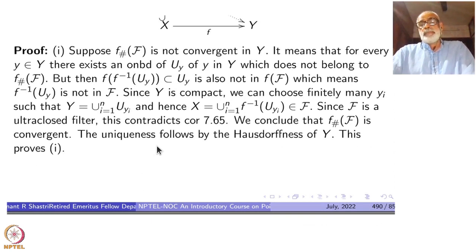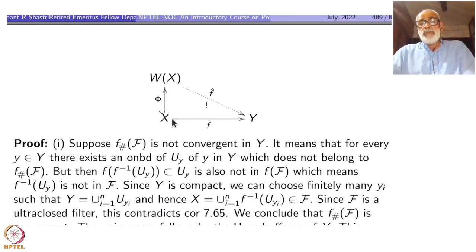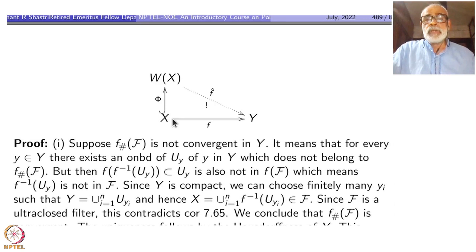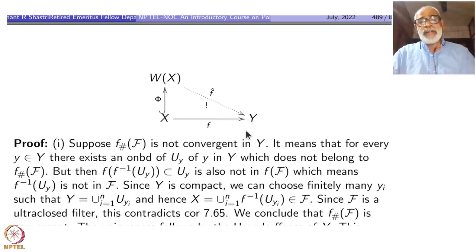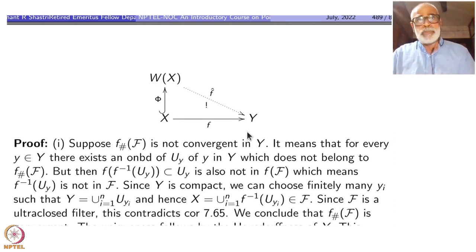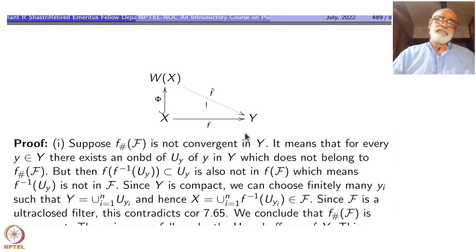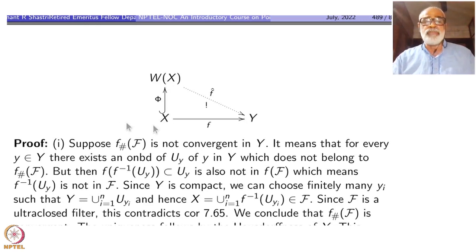The function f-hat is now defined. If you start with x and go to phi(x), then phi(x) is the atomic filter F_x. The image f-check of phi(x) is f of F_x, which is the atomic filter generated by the singleton {f(x)}. That filter converges only to f(x) and no other point. Therefore f-hat of phi(x) must equal f(x). So if you go via phi and then f-hat, what you get is f — that is the commutativity.